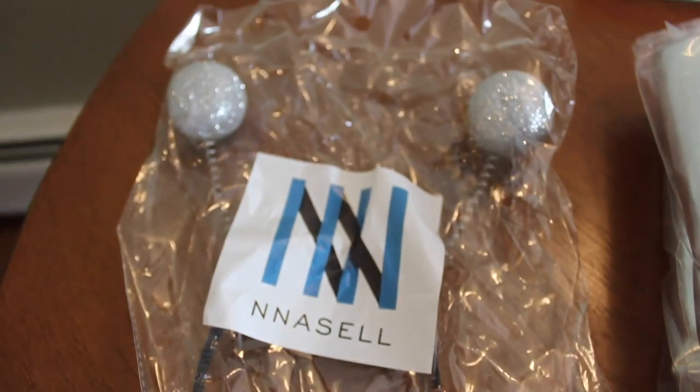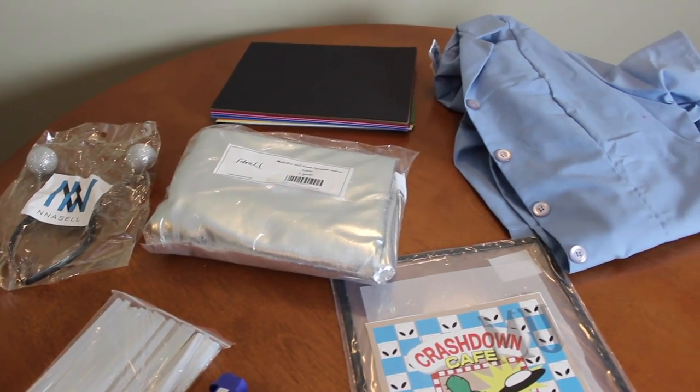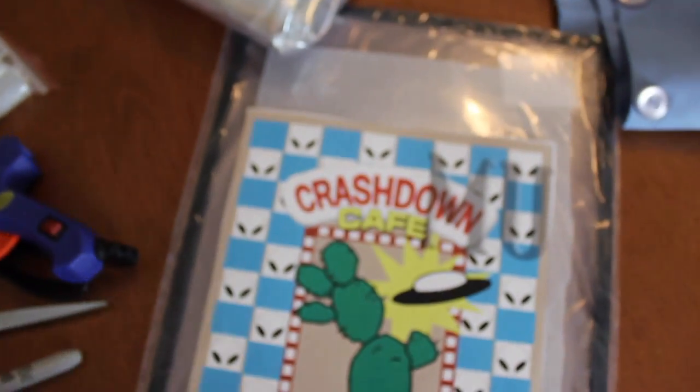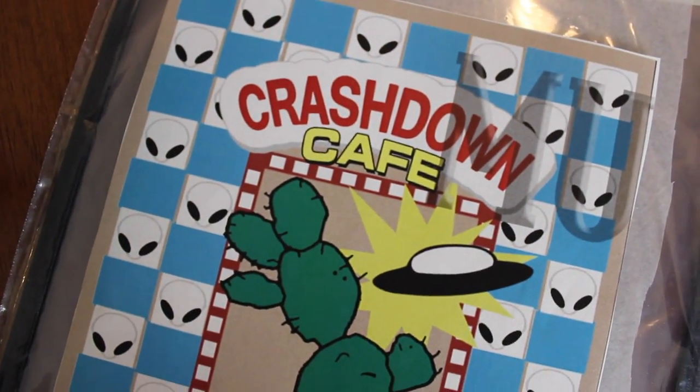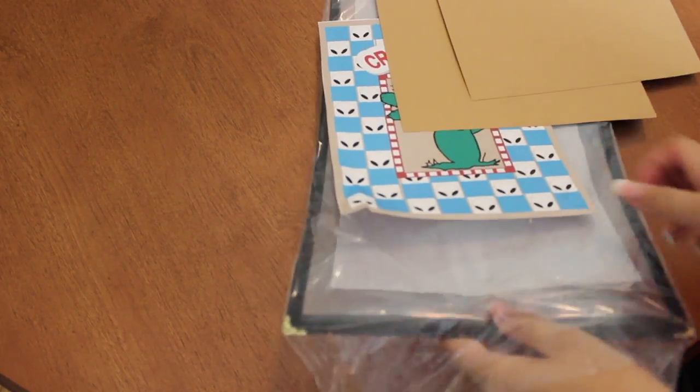We've also got scissors, sharpies, Liz's little alien antennas, metallic-looking fabric, assorted colored construction paper, this uniform that I bought as the base of the costume, cardboard to make the crown that's attached to the antenna, and a menu booklet, as well as a printed out cover of the Crashdown Cafe menu.